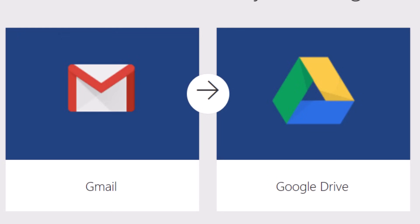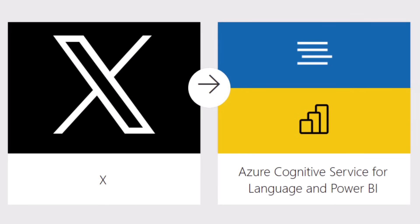Here's another simple example: you could automatically download all Gmail attachments sent to your inbox to a folder you choose in Google Drive, and this would all just happen automatically behind the scenes. Here's a more powerful example — you could send tweets about a particular keyword and their sentiments to a Power BI streaming data set.